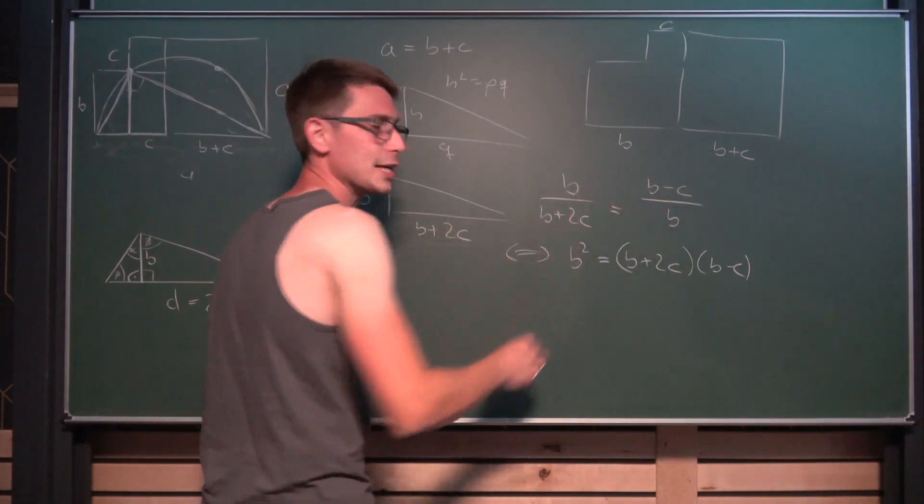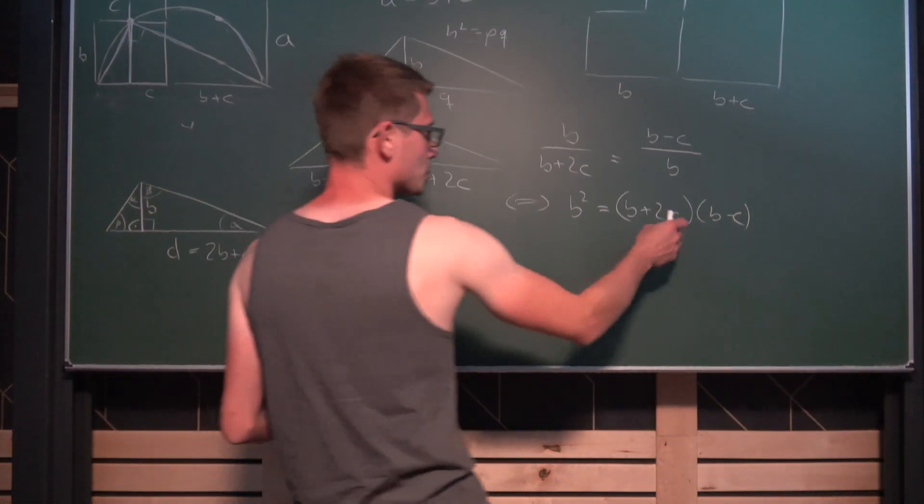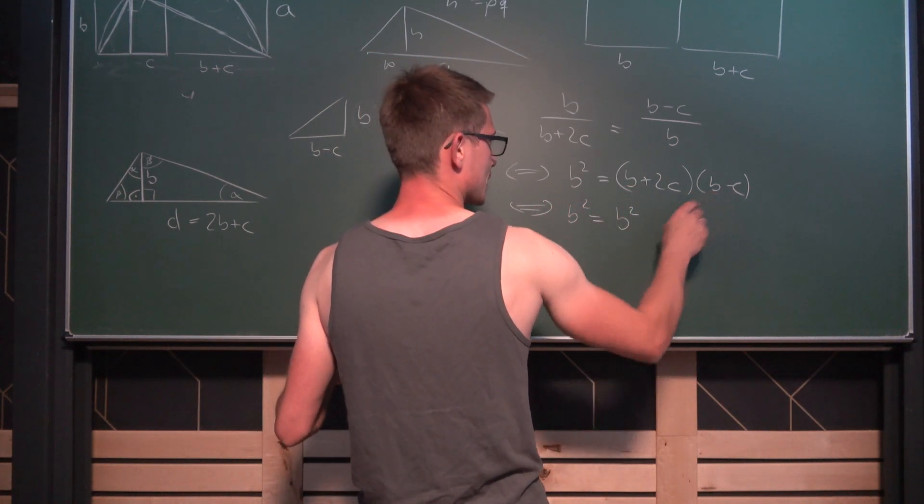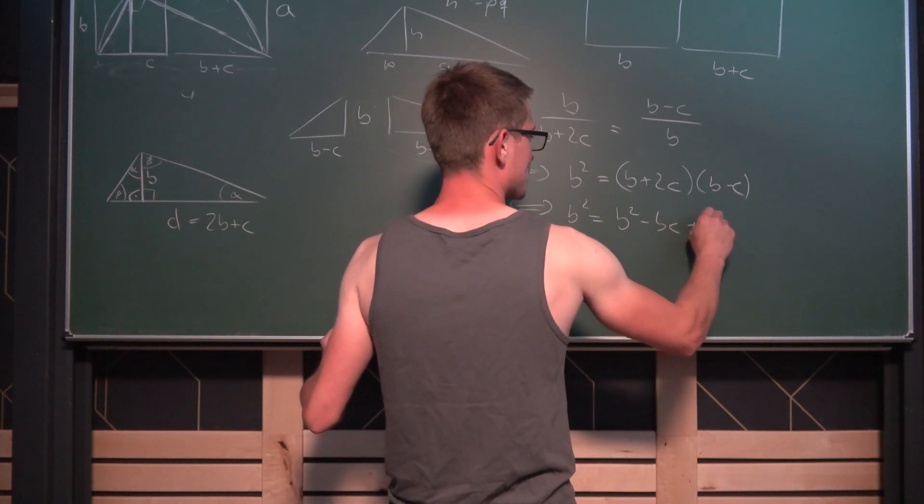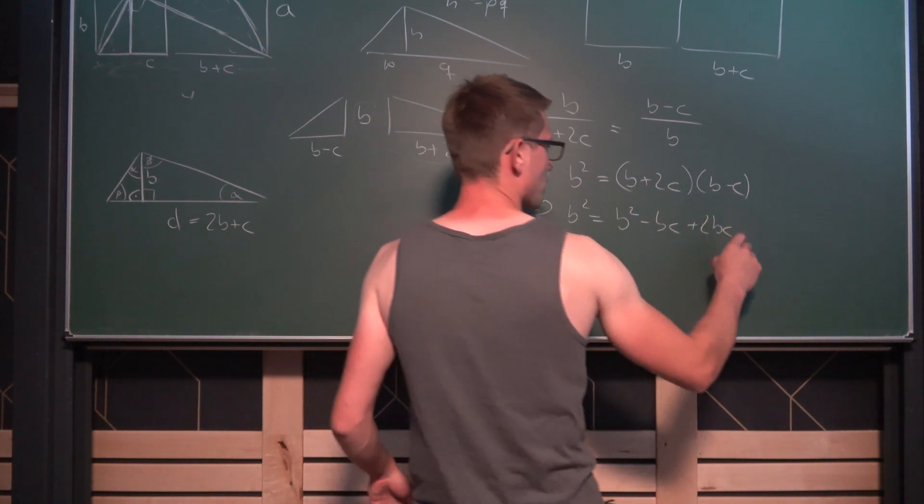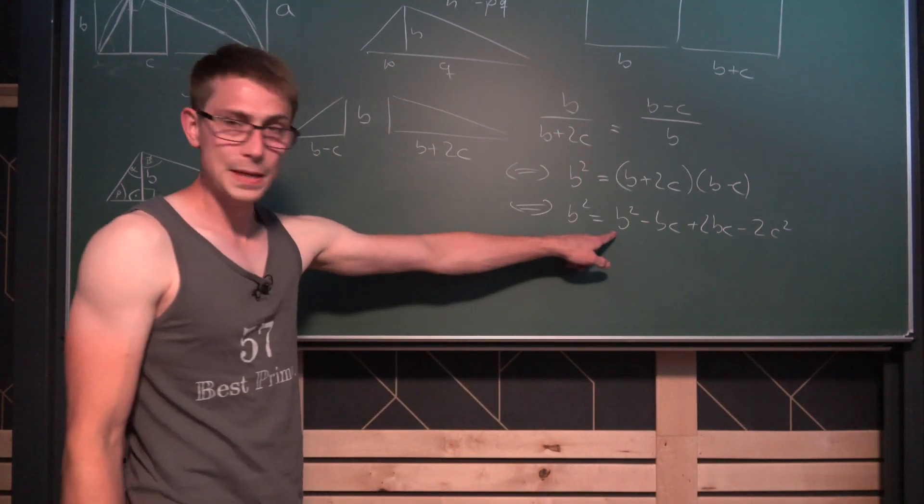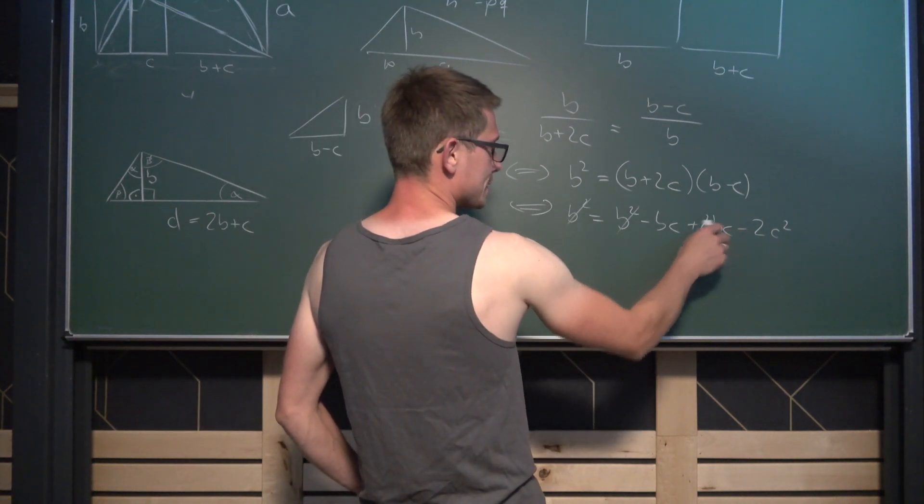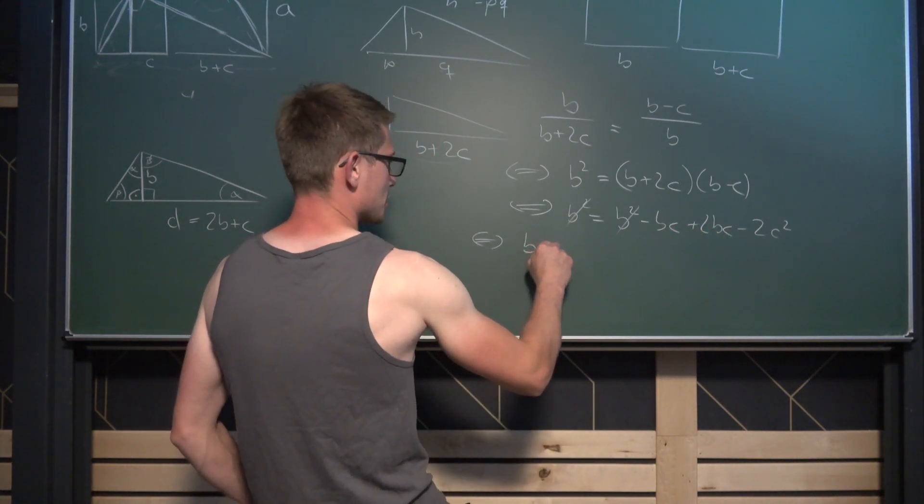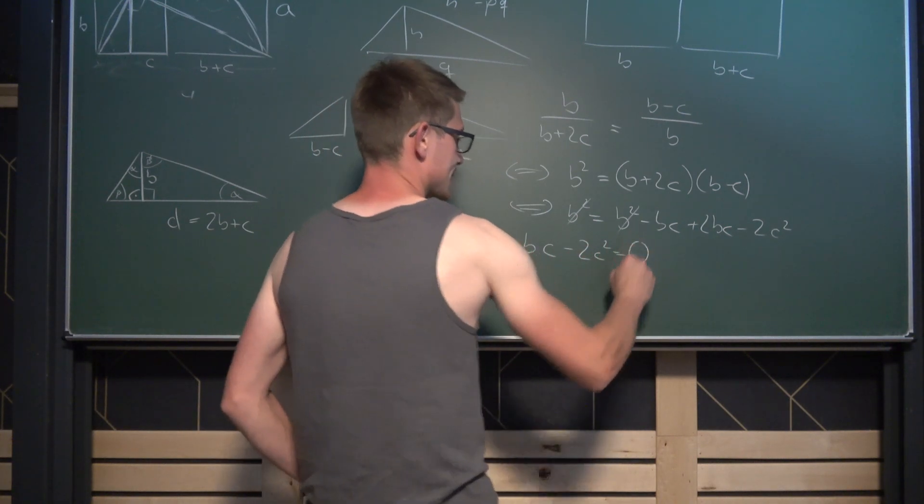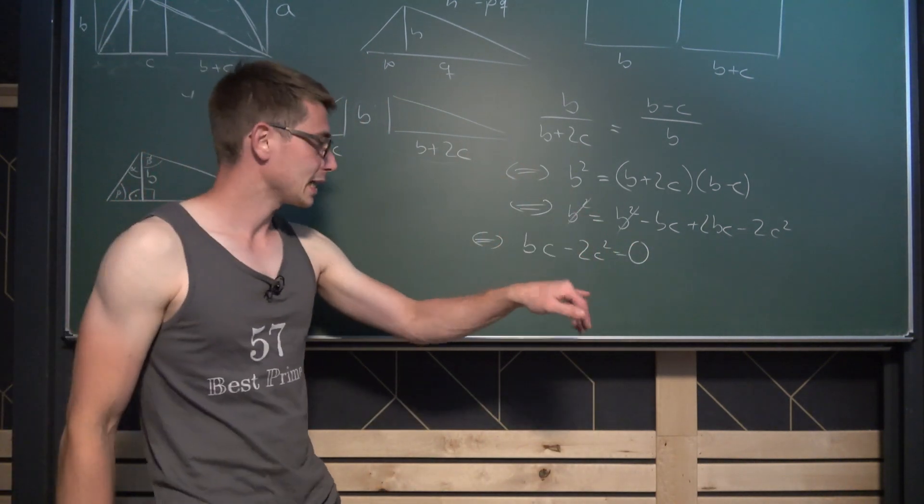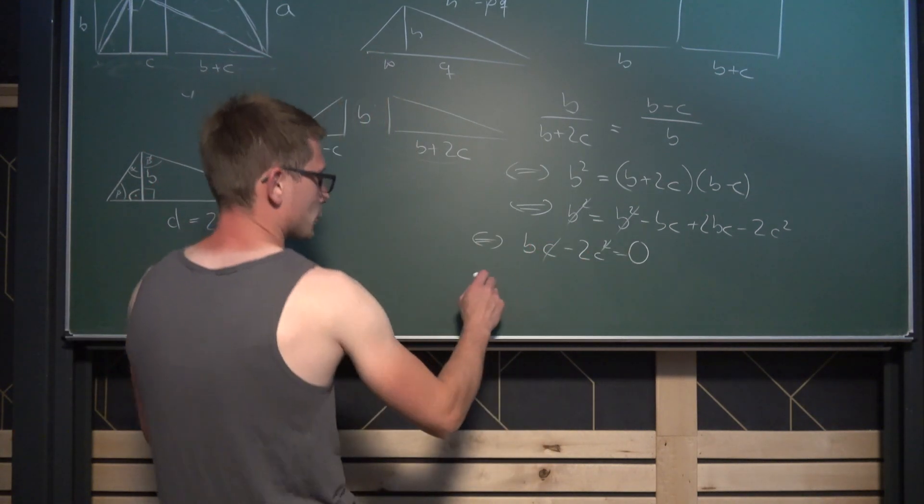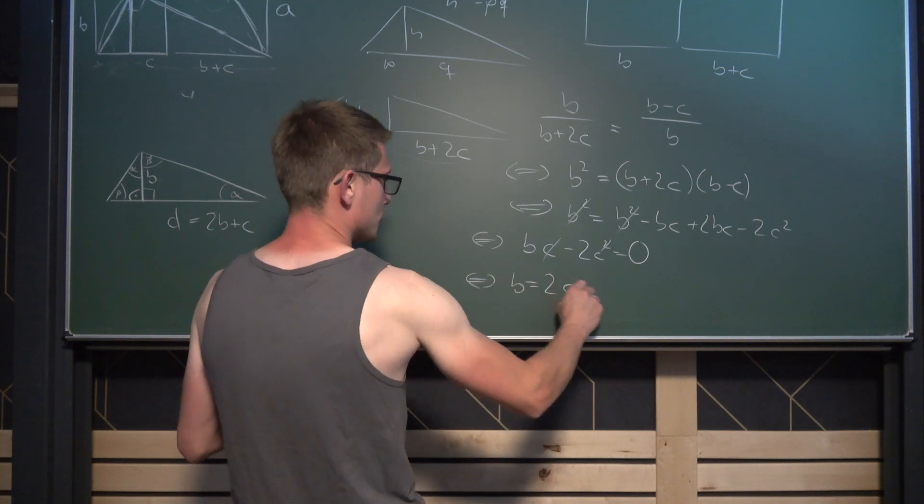Now we can start multiplying everything out. We are going to get that B squared is equal to B squared minus BC, then we have plus 2BC and minus 2C squared. Now B squared is going to cancel out on both sides, giving us that we have 2BC minus 2C squared is equal to 0. C is a positive side length so we can cancel C out on both sides, giving us the relationship that B must be equal to 2C.